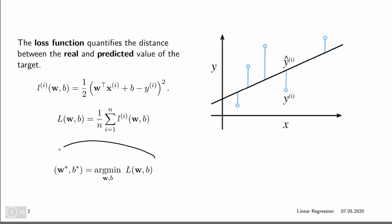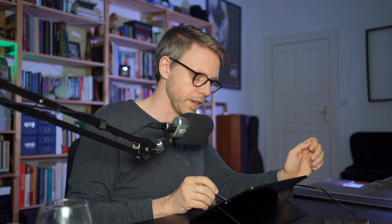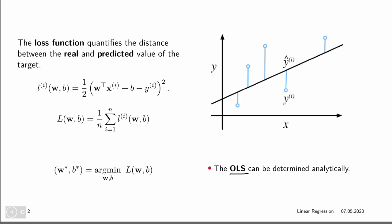What we're after is to optimize this — we want to find the parameter values, which are our linear regression weights and the bias, which minimize this loss function. Last time we mentioned the ordinary least squares estimator, which is an analytic solution to this: x transpose x inverse x transpose y.